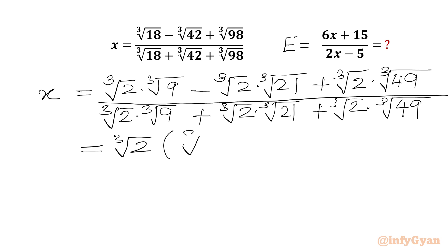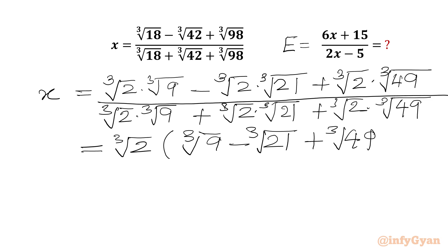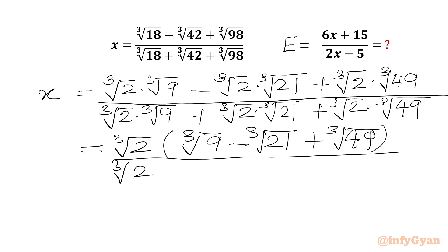Now I can take cube root 2 common out. So in the bracket we will write cube root 9 minus cube root 21 plus cube root 49. In the denominator we will again take cube root 2 common out, and in the bracket we will write cube root 9 plus cube root 21 plus cube root 49.